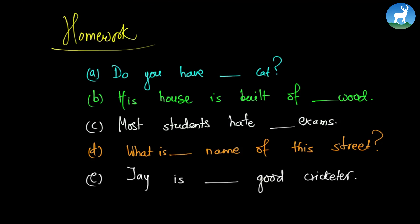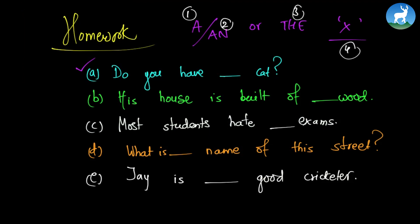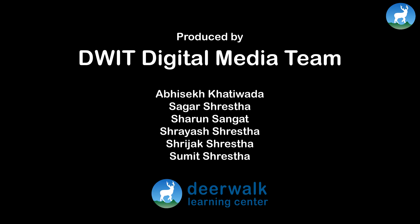With this, we have come to the end of today's class. Your homework is fill in the blanks. You need to fill in the blanks using a, an, or the — and sometimes you can use zero article, meaning no article at all. So there are four choices: a, an, the, or no article. These are five fill-in-the-blank questions. If you have any questions or suggestions regarding this video series, feel free to write us at learning@deawalk.edu.np. Thank you.